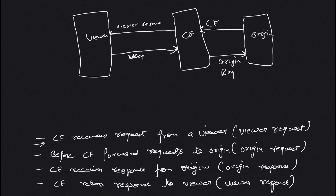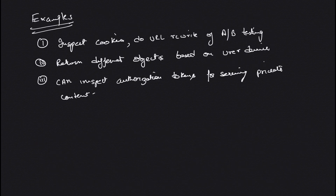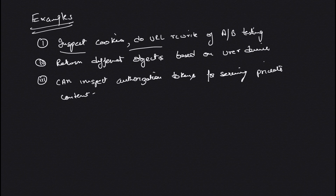Let's look at a few examples of what you can do with Lambda at Edge. First, you can inspect cookies of the incoming request and do URL rewrites — for example for A/B testing. Suppose you want a certain number of requests to go to one server and others to another server. You can have your latest code running on one site and old code on another, and route a small percentage of users to the new site to test that it's functioning correctly.